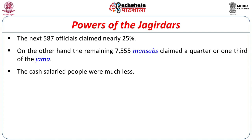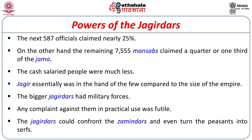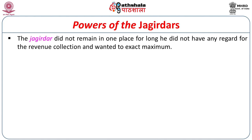The remaining 7,555 mansabdars claimed about a quarter of one-third of the Jamma. The cash-salaried people were much less. Jagir was essentially in the hands of few compared to the size of the empire. The bigger Jagirdars had military forces, so the claim that they could not be coercive is not true. They were always in an antagonistic relationship with the local rulers or local leaders. The Jagirdars could confront anyone and even turn peasants into serfs.